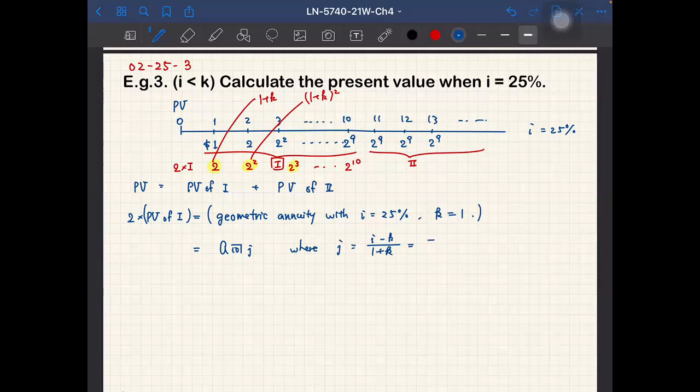So that means negative 0.75 divided by 1 plus K, and 1 plus K is 2, so actually this is negative 0.375 or negative 37.5%.